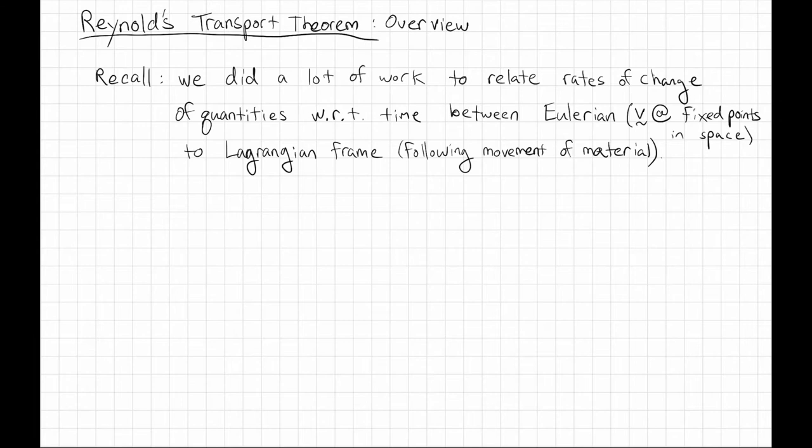But that's not how the laws of the universe are written. They're written in a Lagrangian frame, meaning following the movement of material. For example, we came up with this material derivative as a point-wise way to keep track of the relationship between velocities in Eulerian coordinate systems and the acceleration that appears in F equals MA in the Lagrangian system.